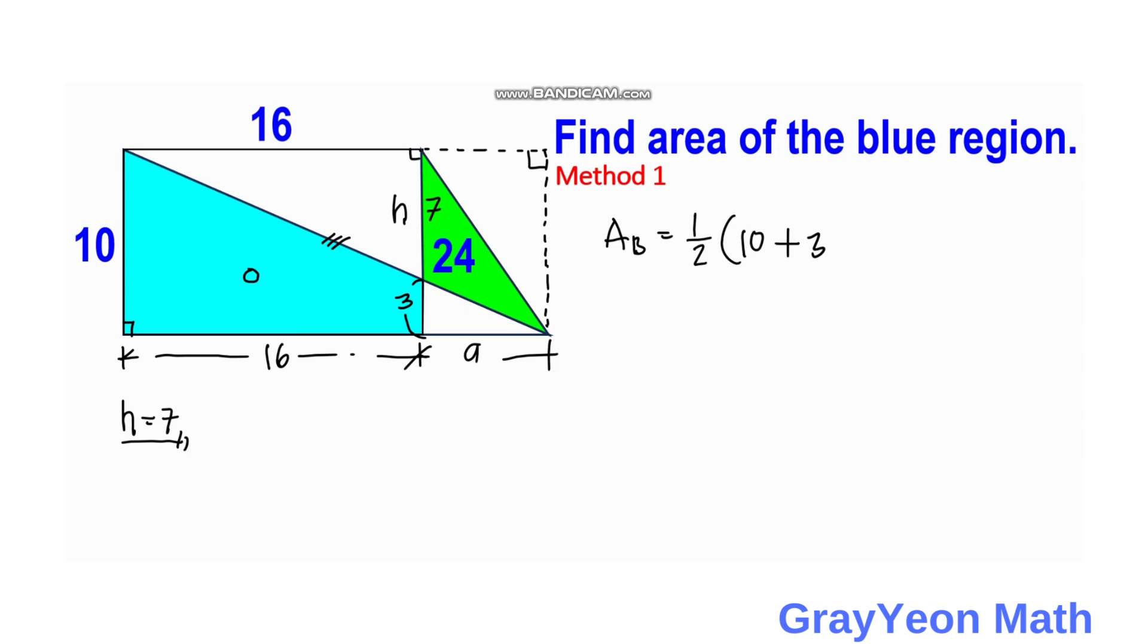So we cancel this, this becomes 8, then this becomes 13 times 8. Area of the trapezoid is equal to 104 square units.